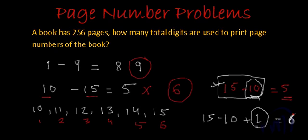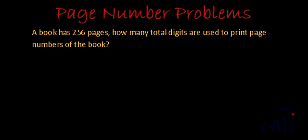Now let's try and find a solution for this problem. The statement says a book has 256 pages. How many total digits are used to print page numbers of the book? In every book we have page numbers printed on every page. So let's systematically count the number of digits required to print page numbers on a book which is 256 pages thick.